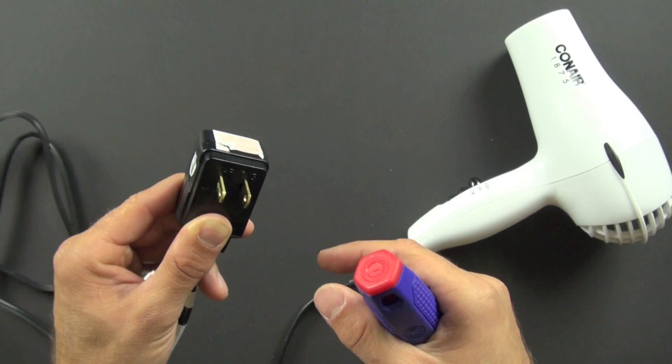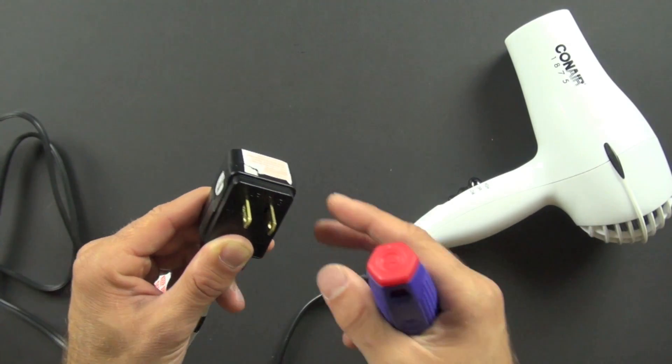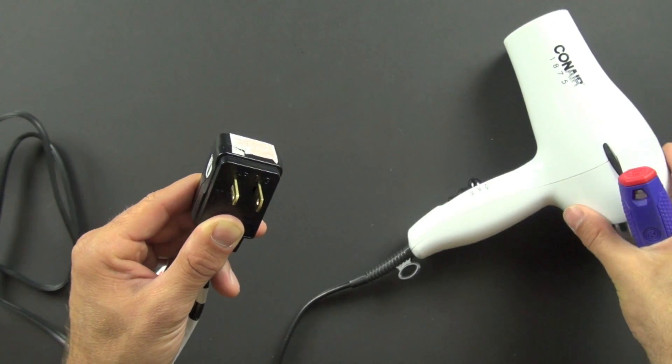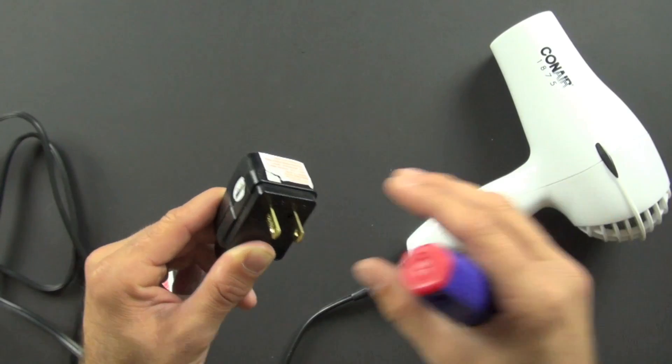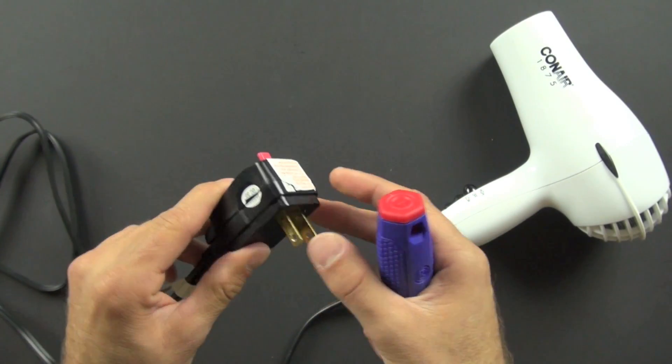And in the past, that was a huge problem because people would get shocked or electrocuted, and now it's not as big a deal because we have these ground fault interrupter circuits.